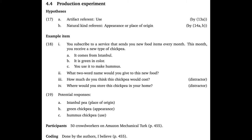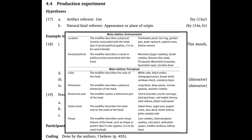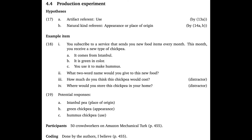Levine et al.'s first step in that direction is a production experiment. We're going to see what happens when people are asked to produce novel compound forms. The hypotheses we'll work with are given in 17 — these are more specific versions of the event and essence-related hypotheses. For artifacts, we expect to see more use-related modifiers. For natural kinds, we expect to see appearance or place of origin. The experimental design nudges people to think about deciding between these two broad categories.